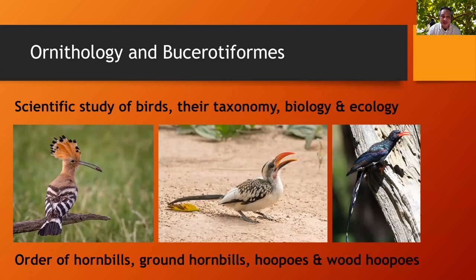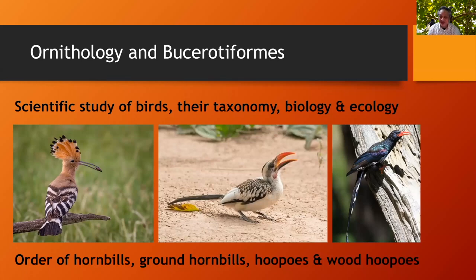Bucerotiformes usually belong with the order Coraciiformes, but I won't go into the details of how they split up the different orders recently — it involves a lot of molecular biology. Bucerotiformes is the order of hornbills, ground hornbills, hoopoes and wood hoopoes. Hoopoes are on the extreme left with the nice orange crest; wood hoopoes are on the extreme right. In the middle we have Bucerotidae, which are the hornbills.